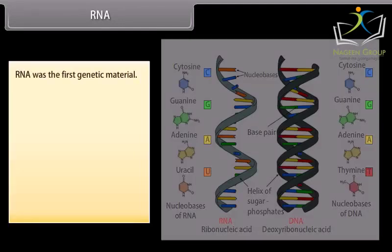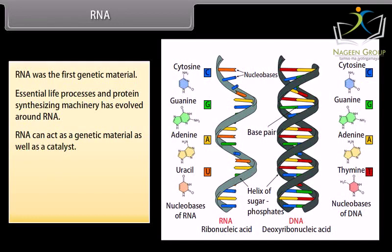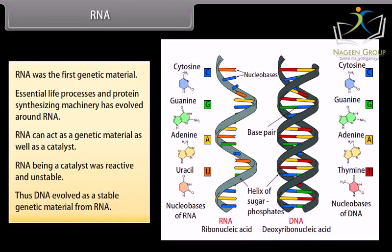RNA was the first genetic material. Essential life processes and the protein-synthesizing machinery evolved around RNA. RNA can act as a genetic material as well as a catalyst. However, RNA being a catalyst was reactive and unstable. Thus, DNA evolved as a stable genetic material from RNA.